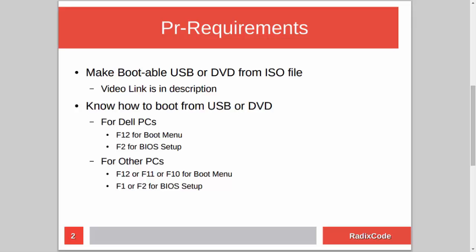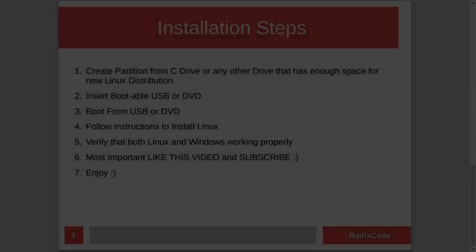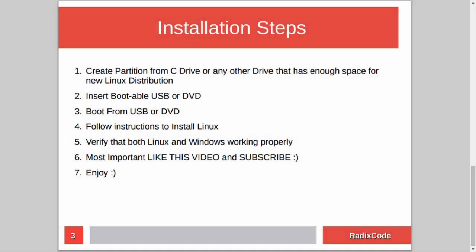The installation steps are very simple. First, we need to create an empty partition for our Linux distribution from the C drive or any other drive that has enough space. After this, we will insert our DVD or USB drive into the computer and restart. Then we will boot from the USB or DVD drive and install our Linux distribution.